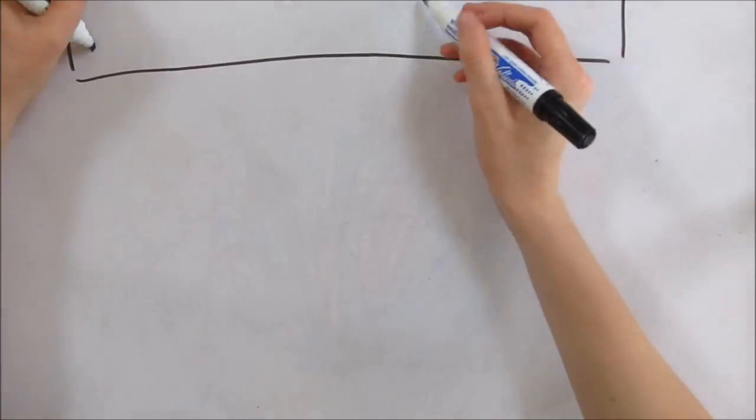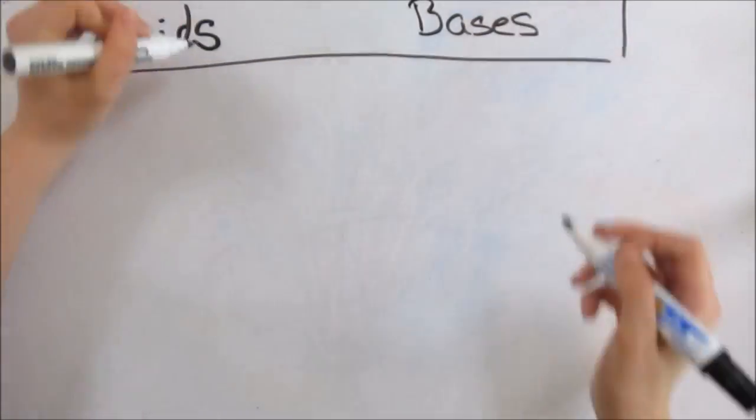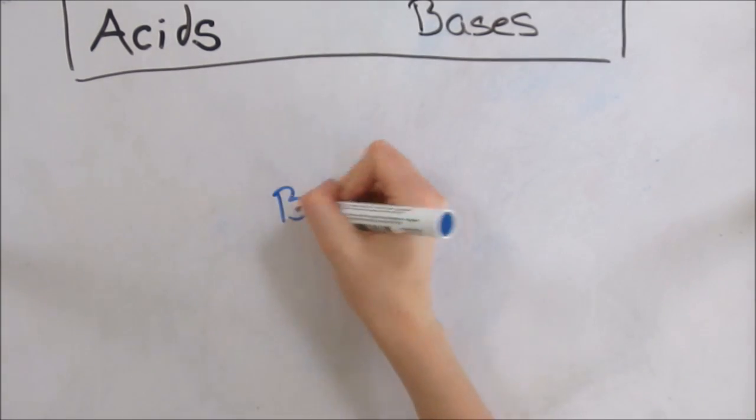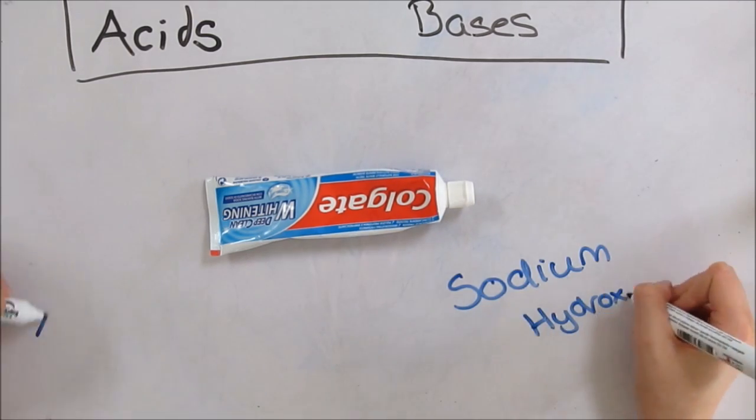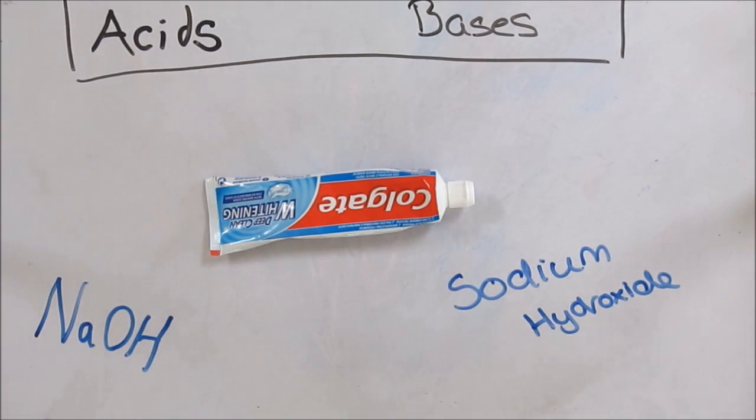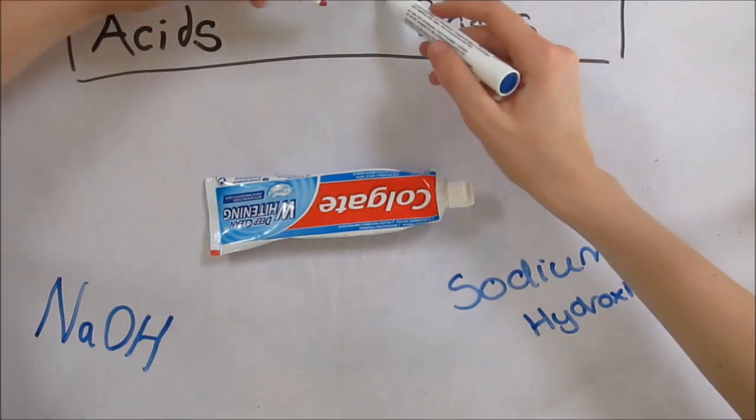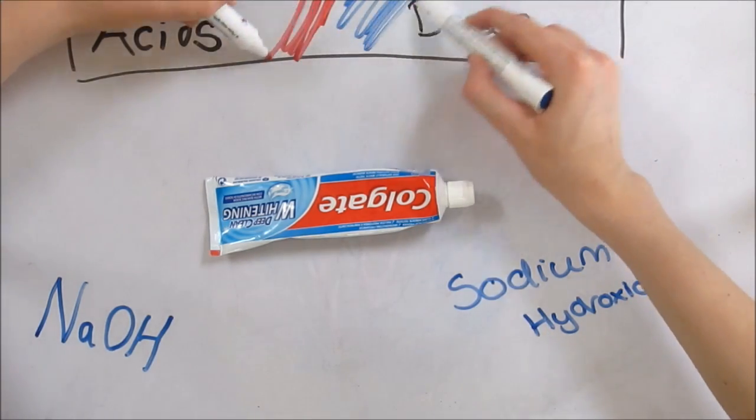Now I'm gonna talk about acids and bases which can be found in many everyday places. An everyday base would be toothpaste, also known as sodium hydroxide or NaOH.